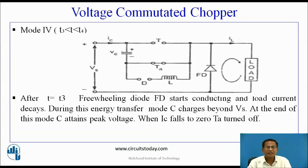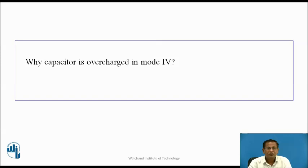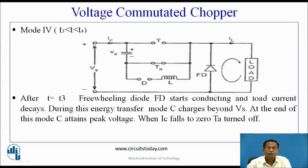Mode 4: T is greater than T3 and less than T4. After T equal to T3, the freewheeling diode starts conducting and the load current decays. During this energy transfer mode, capacitor C charges beyond the supply voltage, and at the end of this mode, the capacitor attains peak voltage. When Ic falls to zero, TA is turned off. The reason capacitor is overcharged in mode 4 is because of the inductor, the inductive load, and the inductive source. The property of the capacitor causes it to charge up to its peak input value, and due to the inductive source, inductive load, and inductor L, the capacitor is slightly overcharged.